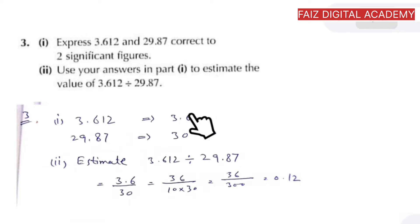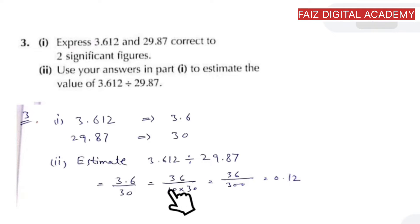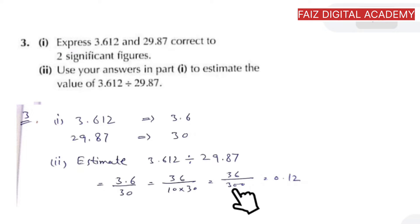For part (b), using the answers from part (a), estimate the value of 3.612 divided by 29.87. We use the rounded values: 3.6 divided by 30. Removing the decimal gives 36 divided by 300, which equals 0.12. We can do this without a calculator just by using the estimation method, which makes the calculation a lot easier.